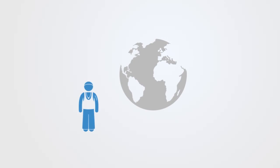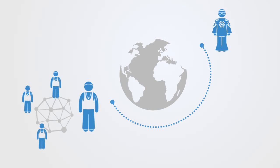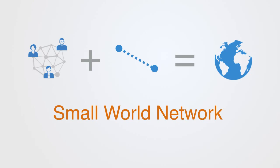Weak ties, in contrast to strong ties, connect people to different social circles. As such they are bridging ties that expose people to new information and novel phenomena. More novel information flows to individuals through weak ties rather than strong ties, because our closest friends tend to move in the same circles we do — the information they receive overlaps considerably with what we already know. Acquaintances, by contrast, know people that we don't know and thus receive more novel information. When we combine both strong links within clusters and these weak bridging links, we get an efficient network for spreading information.